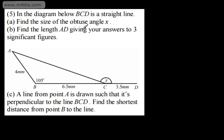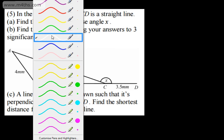Let's look at the next question. This is question 5. It says in the diagram below, BCD is a straight line. In part A, we need to find the size of the obtuse angle X. We've got AB is 4 millimetres, BC is 6.5 millimetres, and the angle ABC is 105 degrees. If I can find this angle just here, angles on a straight line sum to 180, so I can subtract that. Just thinking ahead, I'm going to have to use at least two applications — that might be cosine followed by sine, or cosine followed by cosine.